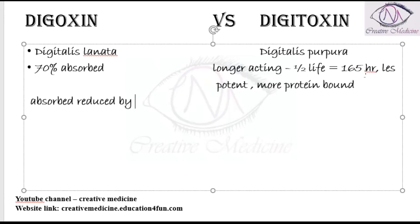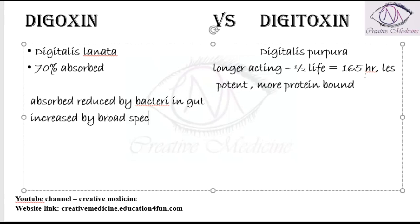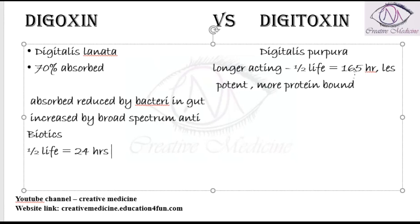70 percent of digitoxin is absorbed, and this absorption is mainly reduced by bacteria in the gut. Absorption of digitoxin is increased by broad-spectrum antibiotics. So whenever there are bacteria present in the gut they will decrease absorption of digoxin, and whenever you give digoxin with antibiotics you should titrate the dose.